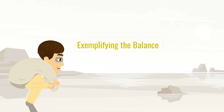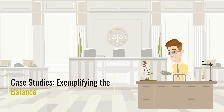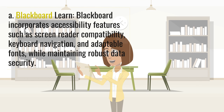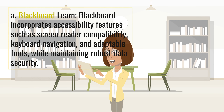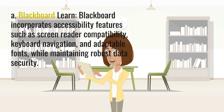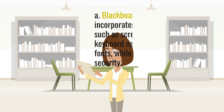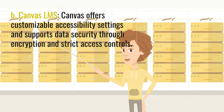Case studies exemplifying the balance. A. Blackboard Learn: Blackboard incorporates accessibility features such as screen reader compatibility, keyboard navigation, and adaptable fonts, while maintaining robust data security. B. Canvas LMS: Canvas offers customizable accessibility settings and supports data security through encryption and strict access controls.